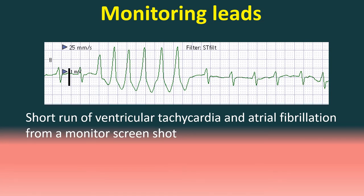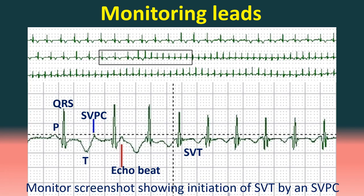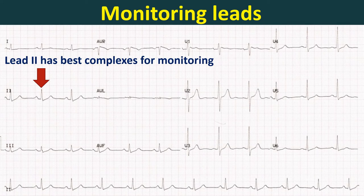ECG monitoring leads are different from the usual leads used for recording a 12-lead ECG, because monitoring leads are used mainly for rhythm analysis and sometimes for ST segment monitoring to look for ongoing ischemia. Any lead which can show the P waves, QRS complexes, and T waves well can be used for ECG monitoring. Often the monitoring lead will have to be tailored for each individual, and it may be worthwhile to review the 12-lead ECG to decide which lead is likely to give the maximum required information for that particular person.